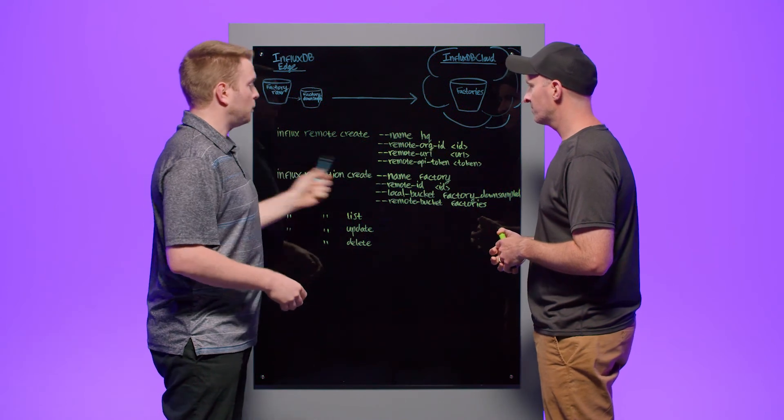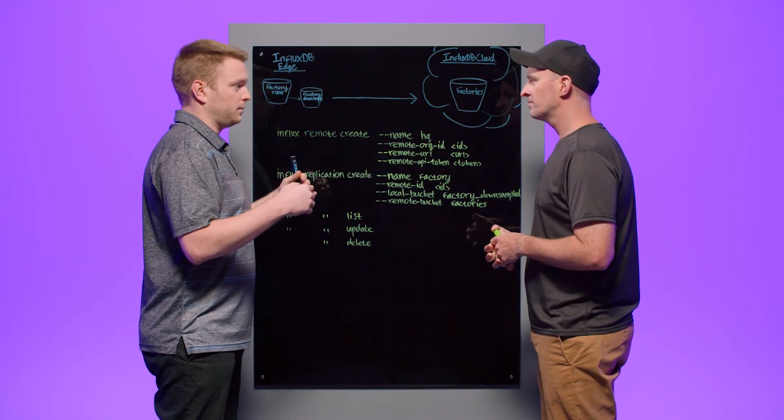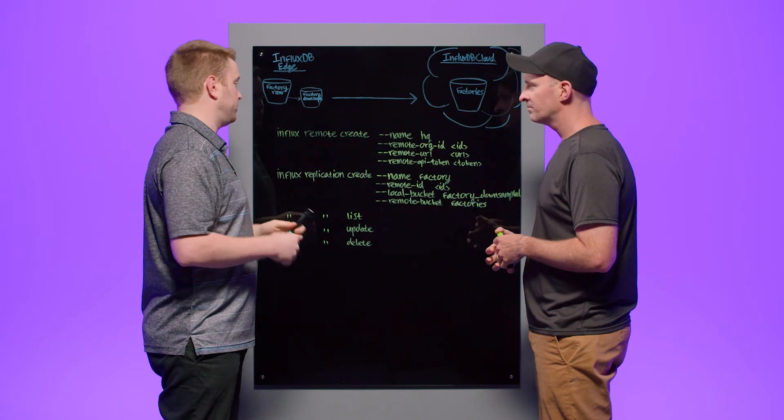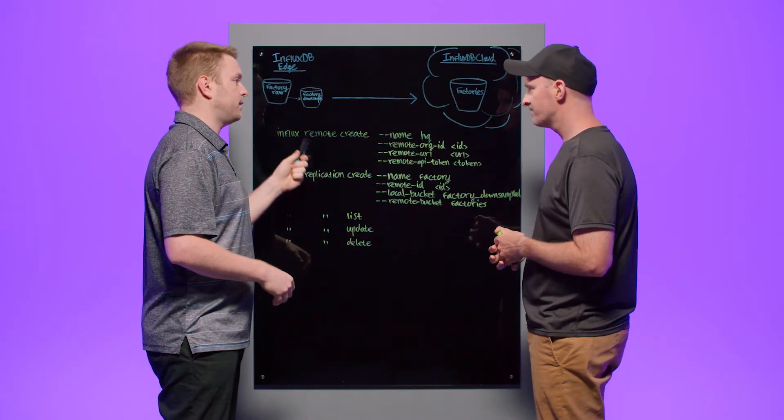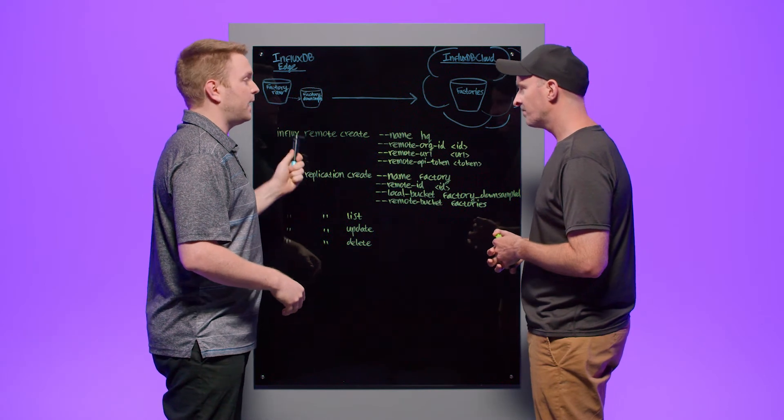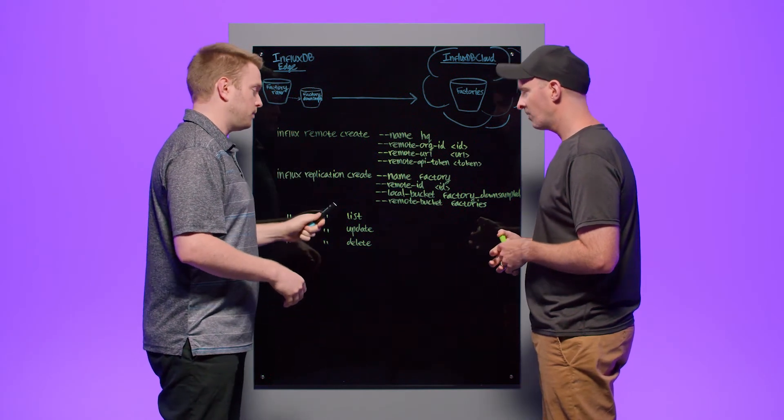A key thing is once you run this, you'll get back a success return record that says here's your remote, and it'll come with an ID. So you'll have a unique identifier for the remote. You'll need that for every subsequent replication that you create. The good news is you only have to create the remote once. So you can create replications against that ID as many times as you want.